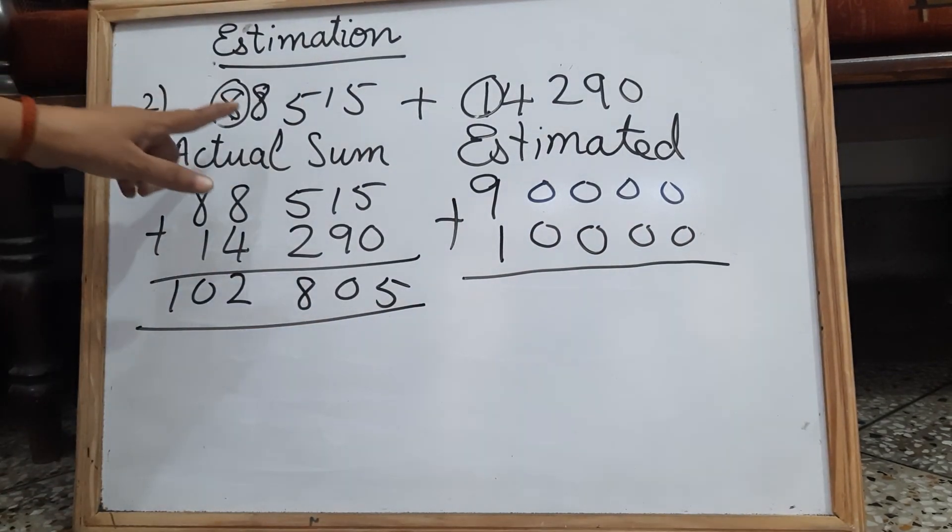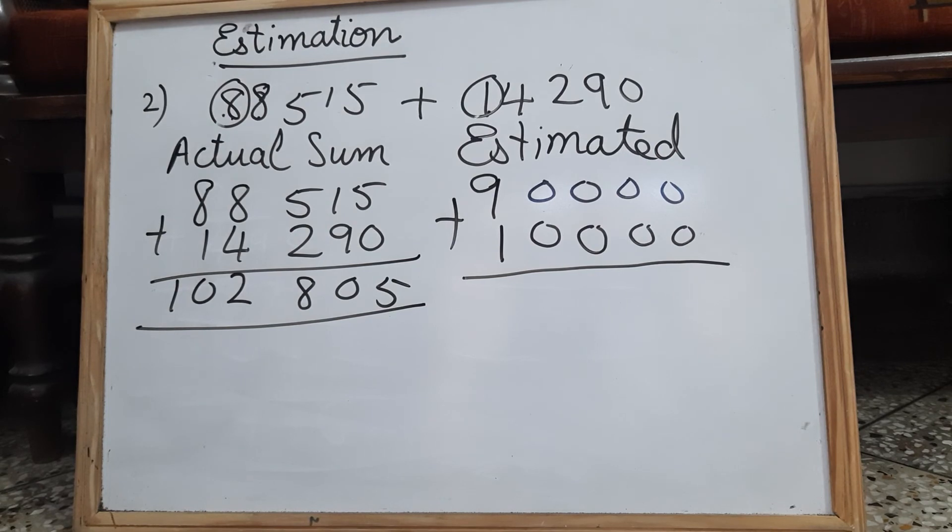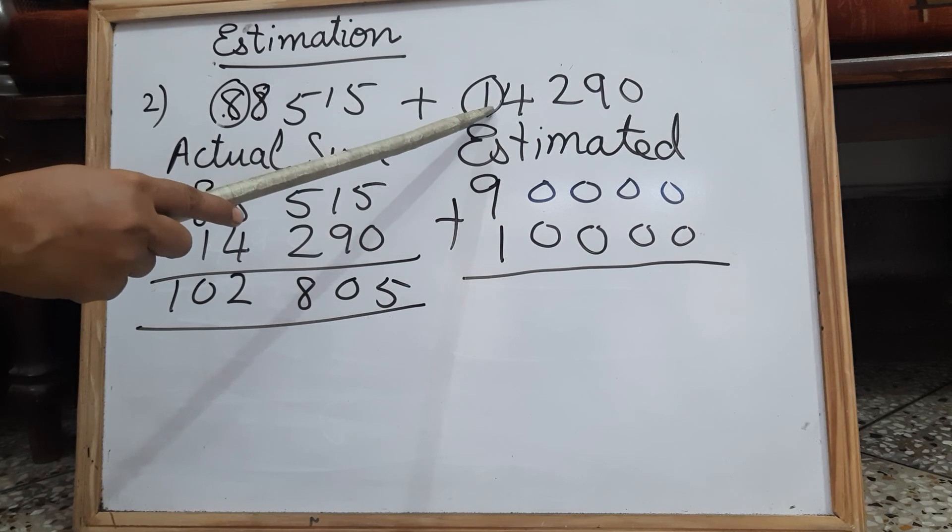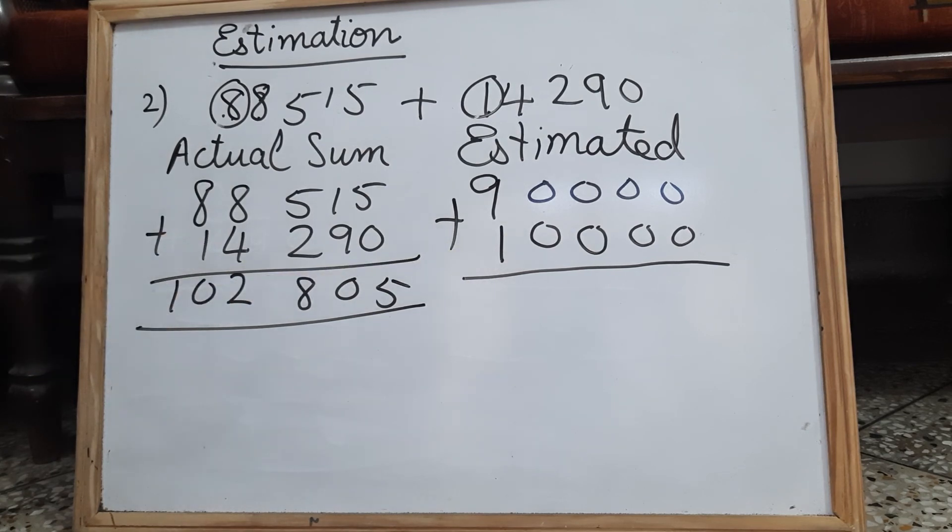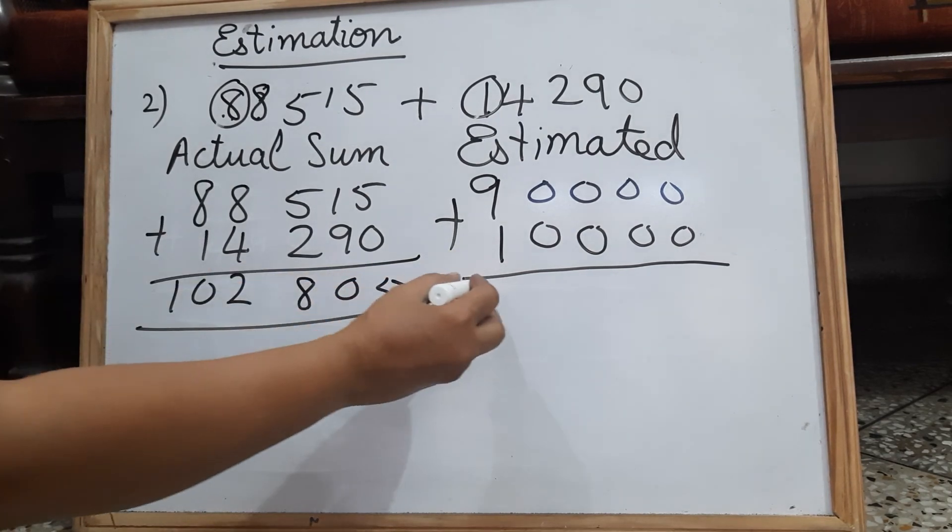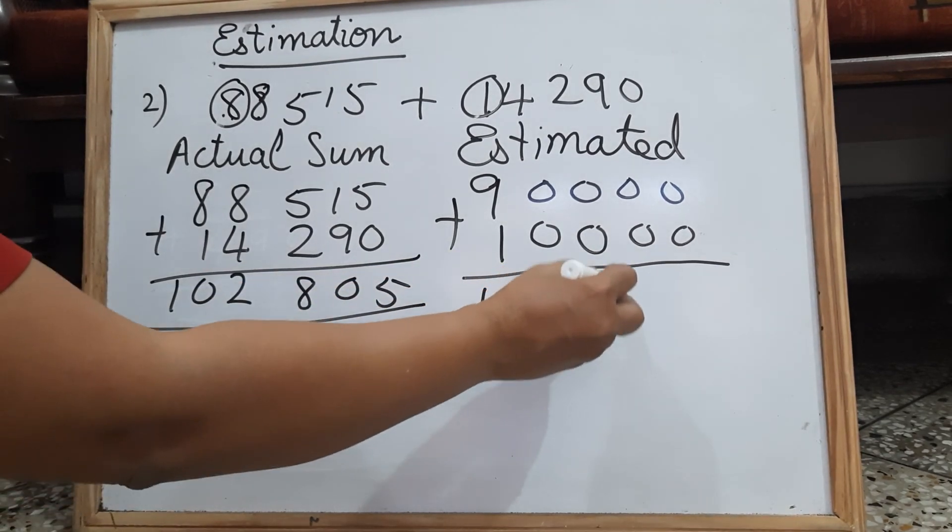So 88,515 when rounded off to the nearest 10,000 we get 90,000. And when 14,290 is rounded off to the nearest 10,000 we get 10,000. Now let us find the sum. It is 100,000.